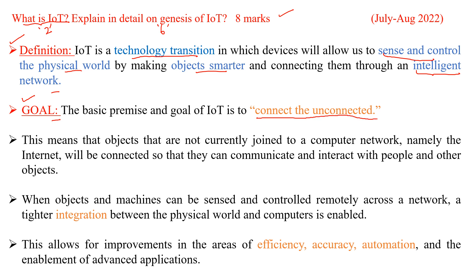The main goal of IoT is to connect the unconnected. This means that objects not currently joined to a computer network — namely the internet — will be connected so that they can communicate and interact with people and other objects. When objects and machines can be sensed and controlled remotely across a network, a tighter integration between the physical world and the computer is enabled.